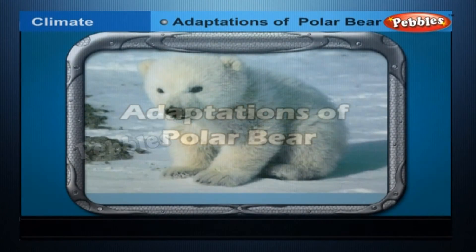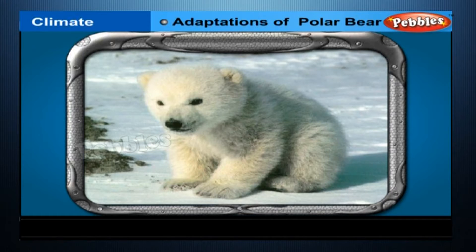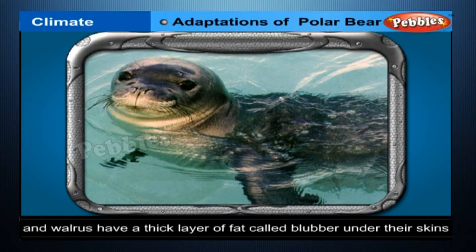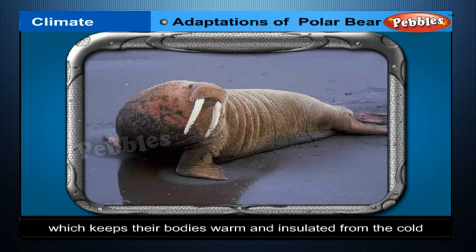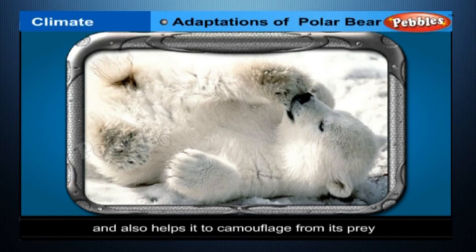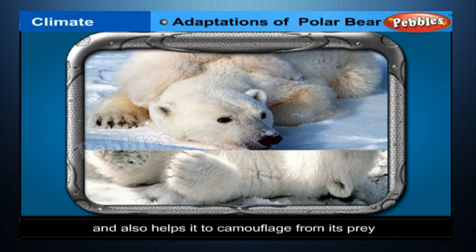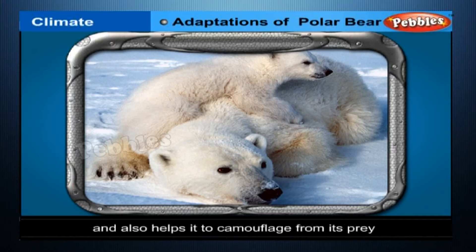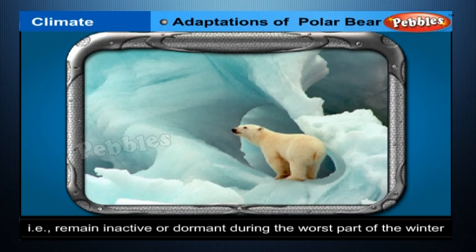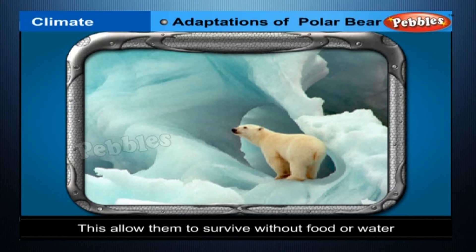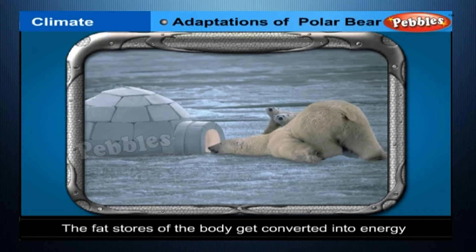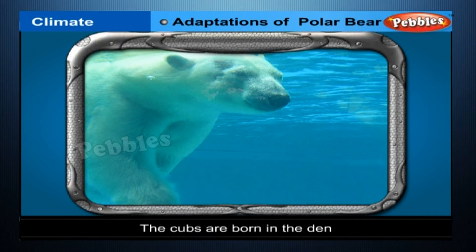How does a polar bear adapt to its cold Arctic life? Polar bears and many other animals such as seals, whales, and walrus have a thick layer of fat called blubber under their skins, which keeps their bodies warm and insulated from the cold. The white fur of the polar bear provides good insulation and also helps it to camouflage from its prey, enabling it to hunt well both on land and in the water. Female polar bears dig dens in the snow where they might hibernate — that is, remain inactive or dormant during the worst part of the winter. This allows them to survive without food or water during the cold winter season. The fat stores of the body get converted into energy for the body to function during hibernation. The cubs are born in the den.